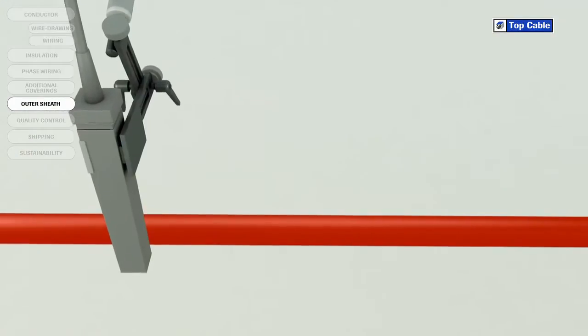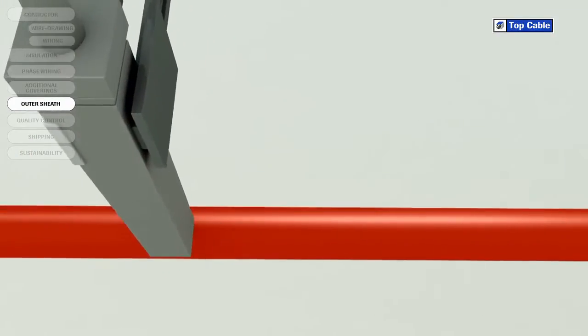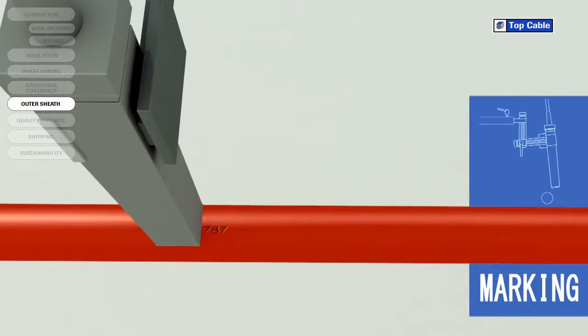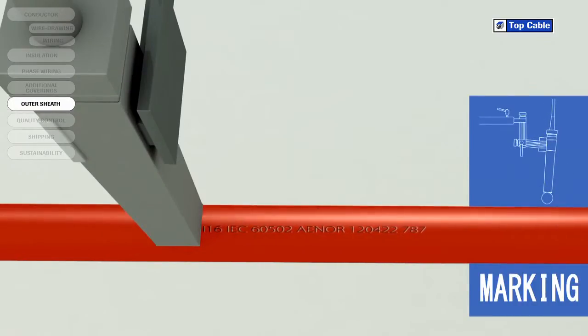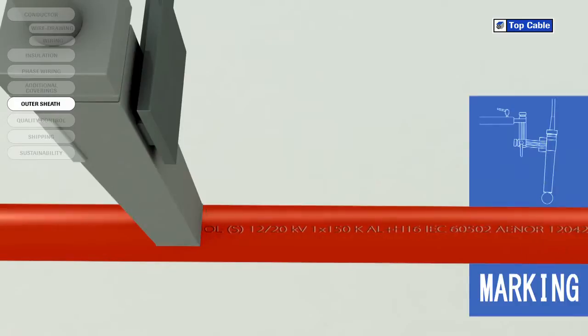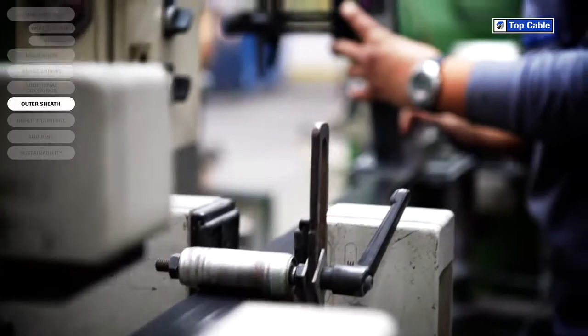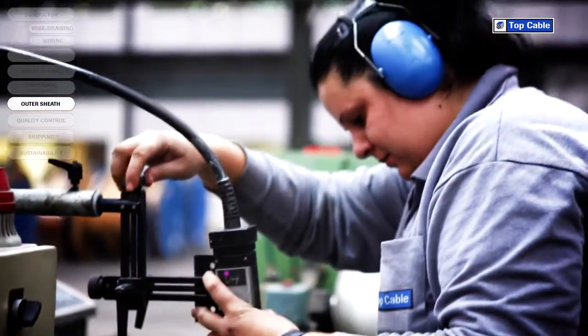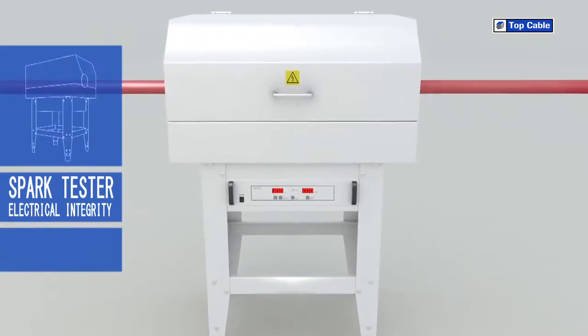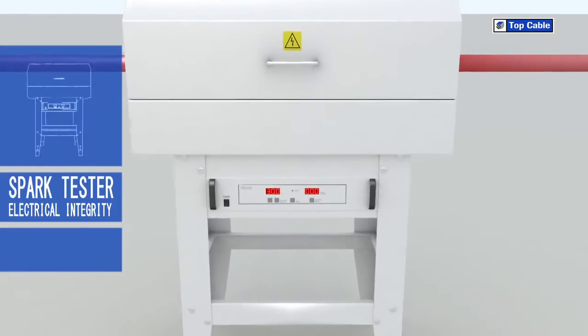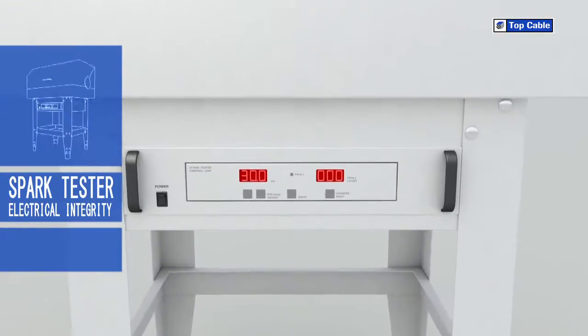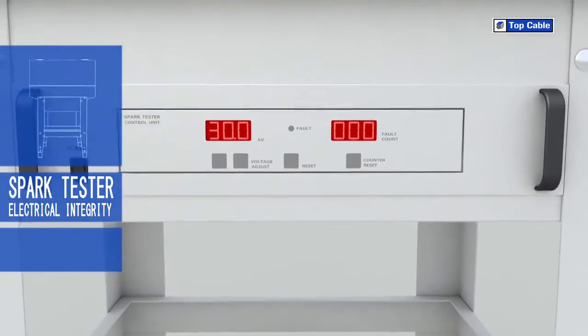So that all Top Cable customers can correctly identify their cables, the cables are marked with the most important information: manufacturer, trade name, cable name, number of conductors, cross section, construction regulation and standards, CE marking, and other information of interest such as the product's certification. There is also a meter-by-meter mark on the cable to help customers with their stock control.